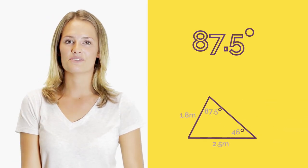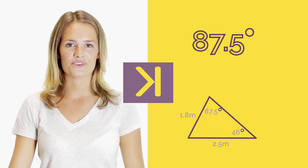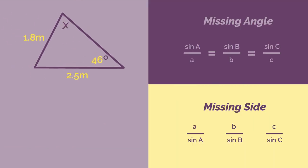Did you get 87.5 degrees? If you did and want to skip the explanation, click here. Otherwise, let's go through it together. Start by labeling the sides and angles with a's and b's. I'm going to label 1.8 meters as a, so therefore 46 degrees must be angle A. So then 2.5 is side b and the missing angle x is capital B.